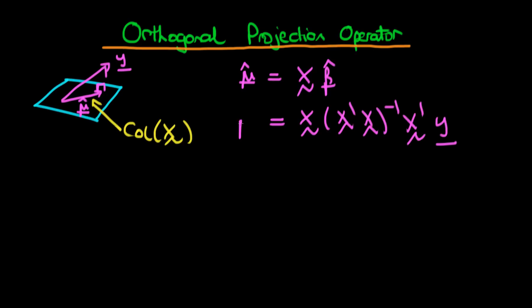...then we have an expression for mu hat in terms of y. So this term which I'm underlining here really is the orthogonal projection operator which transforms y or projects y onto the column space of X. We call that orthogonal projection operator Px and we just let it operate on y. From the logic which we've used thus far, we can identify that Px is actually equal to X times X prime X to the power minus 1 times X prime.